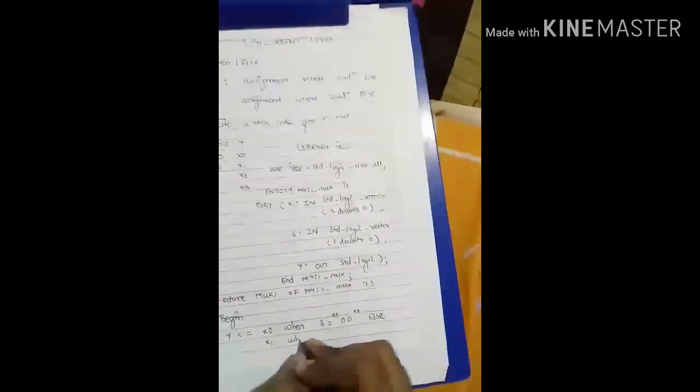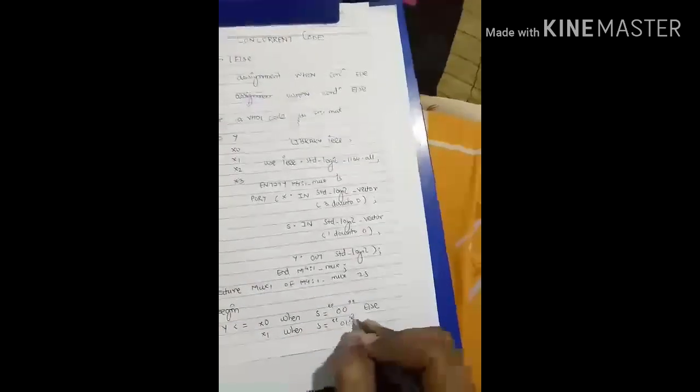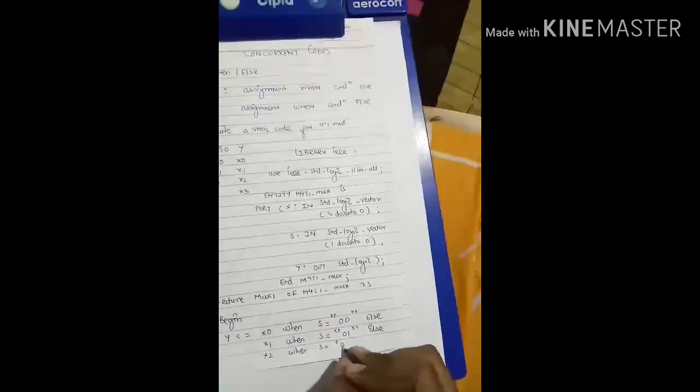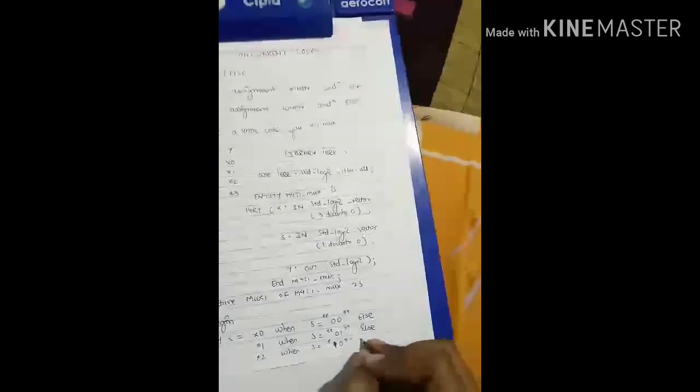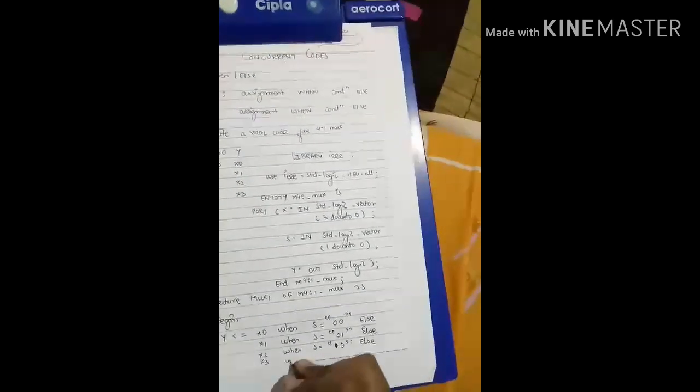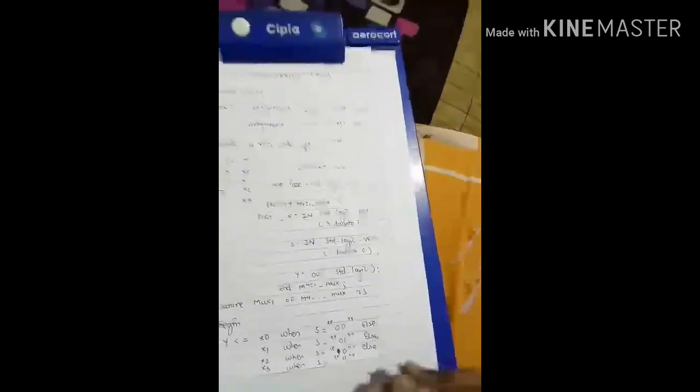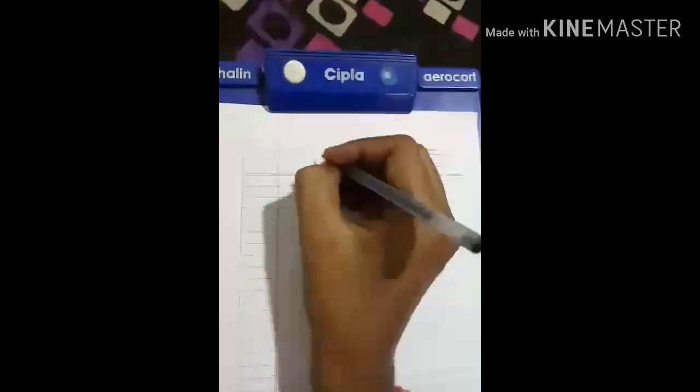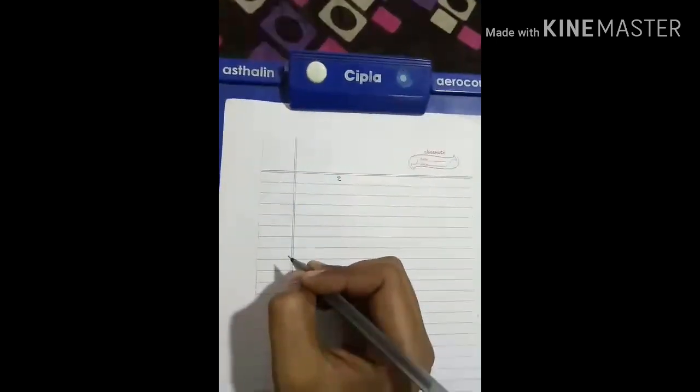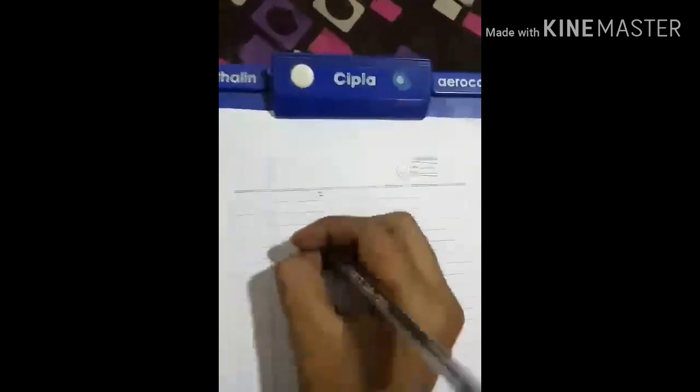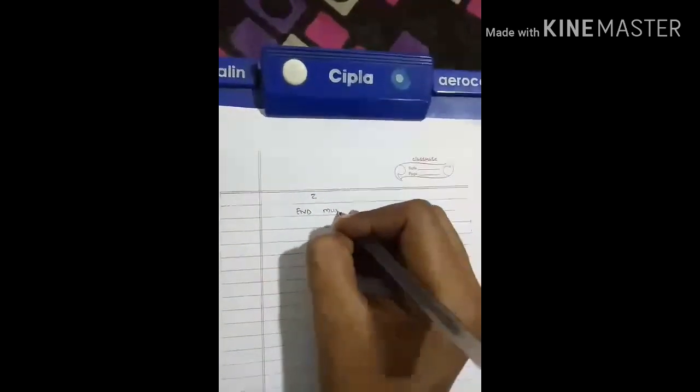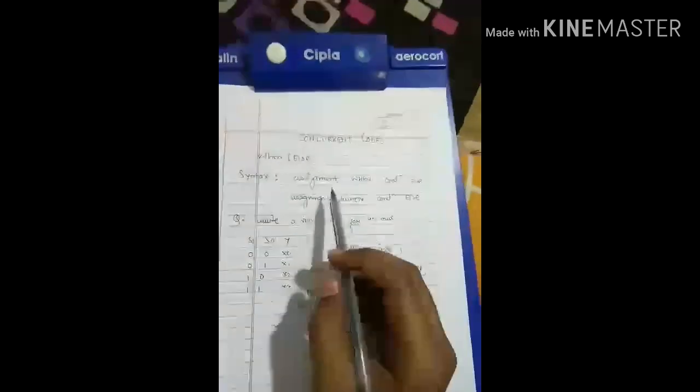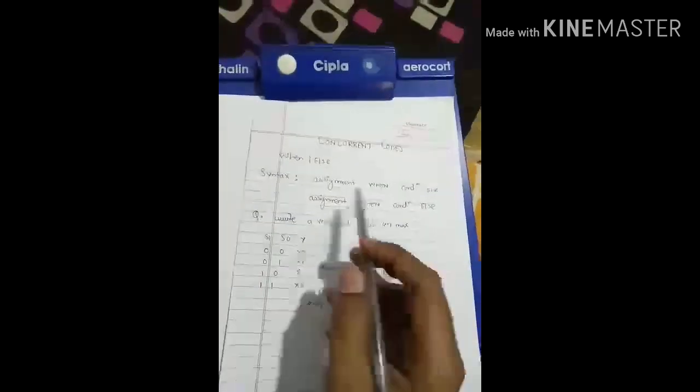else X2 when S equals 10, else X3 when S equals 11. Now you need to write end mux1, that is the architecture name. This is the code of 4-to-1 MUX with when-else statement.